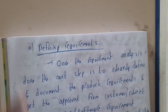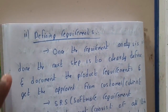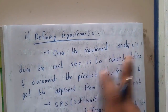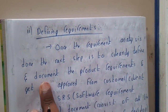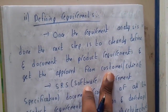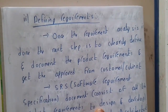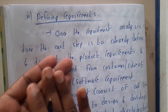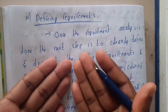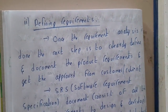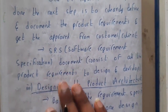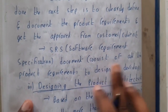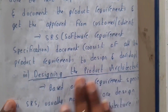In the next step — defining requirements — you will finalize the requirements: what you want, how you want it, and what output the client can expect. Once requirement analysis is done, the next step is to clearly define and document the product requirements and get approval from the customer. You'll make an SRS — Software Requirements Specification — where you specify everything in basic documentation, not full-fledged documentation.